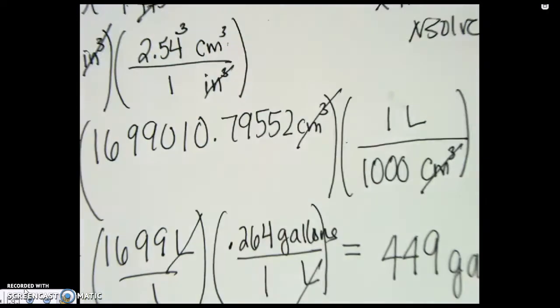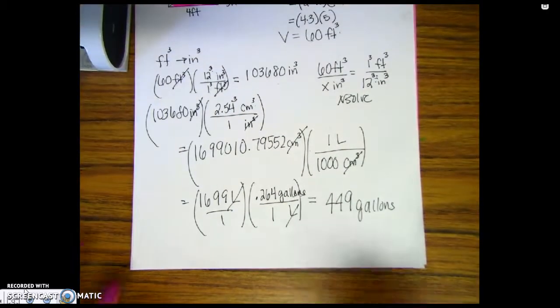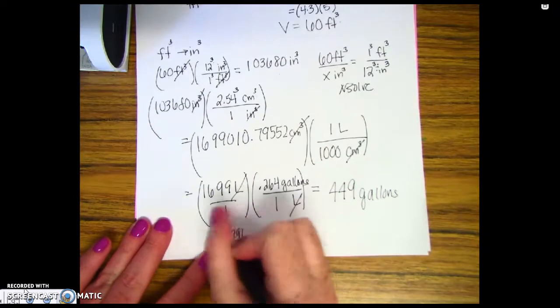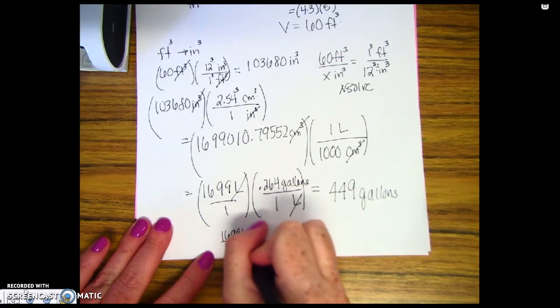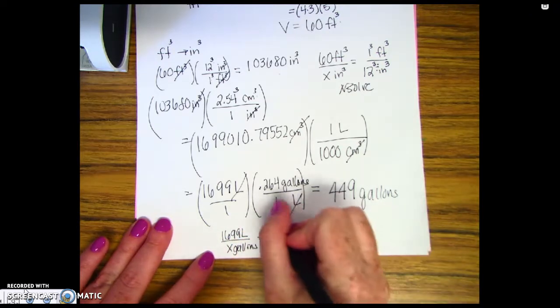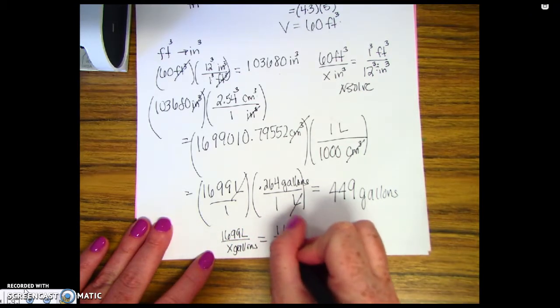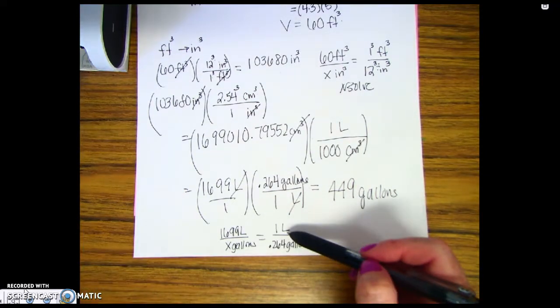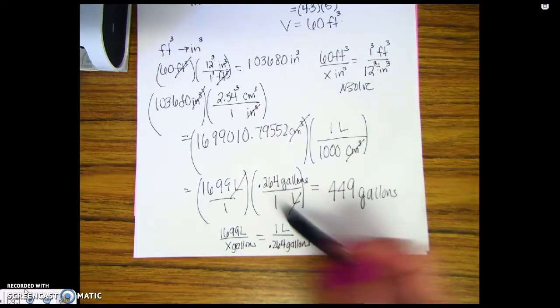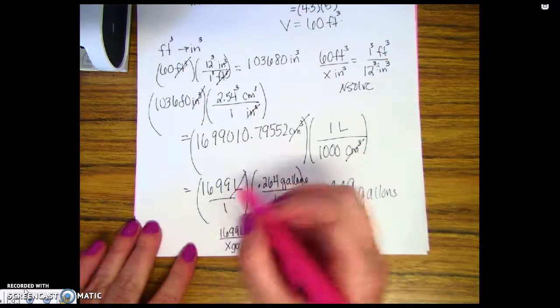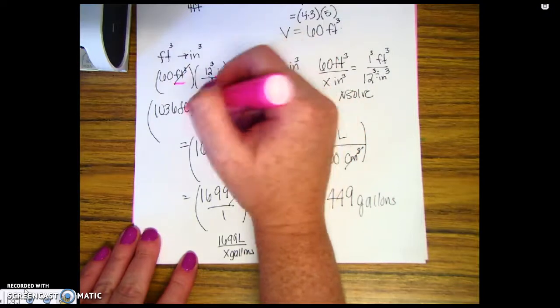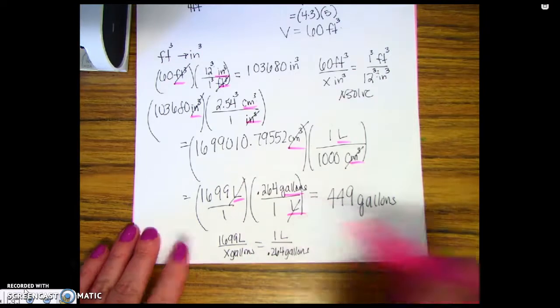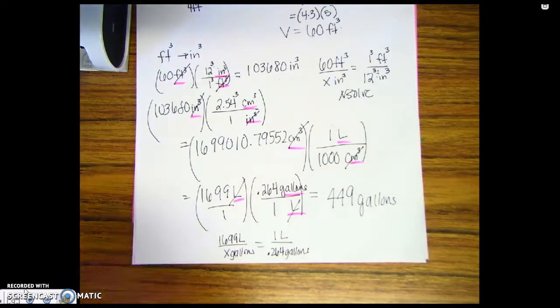Again for those of you that want to use the proportions you can. This would be 1699 liters is X amount of gallons, and one liter is 0.264 gallons. So any of you that do want to use the proportions, I am absolutely okay with that. What I'm not okay with is if you don't have all of these units all over your paper. I think that you're probably going to get lost in the math when we start bringing in density.